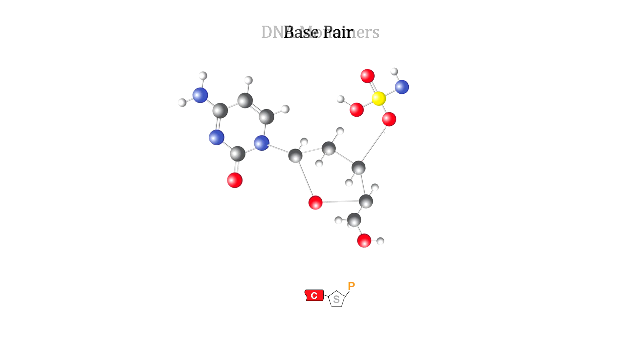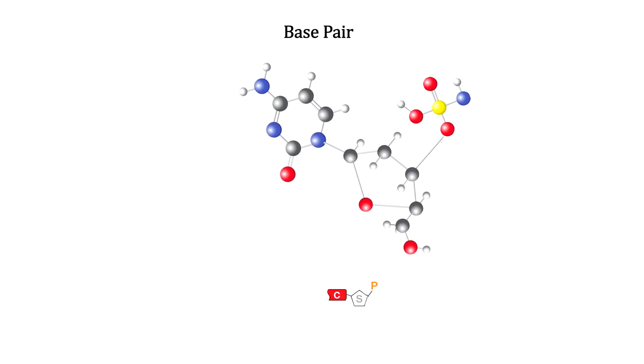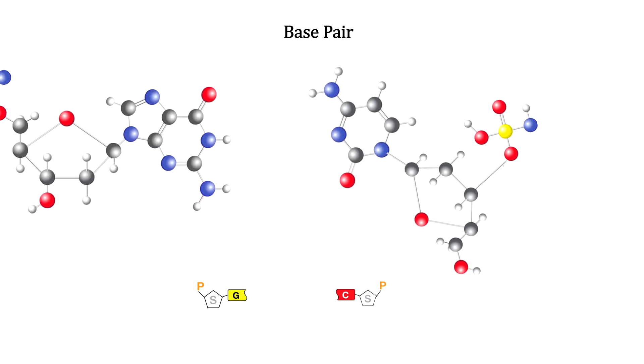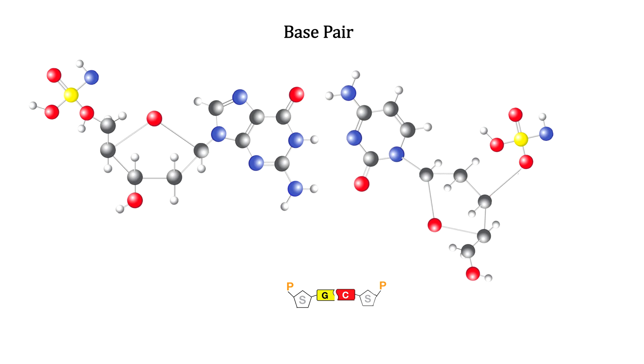Now we move in a guanine monomer and join it with the cytosine monomer. Together, they form a base pair held together by hydrogen bonds. This is a full DNA horizontal component. This GC example contains 72 atoms.